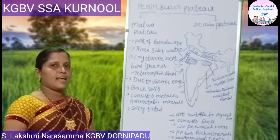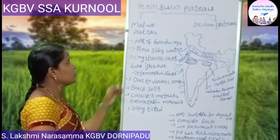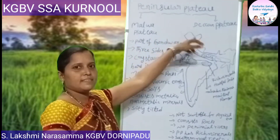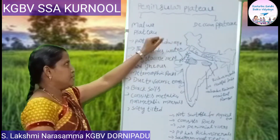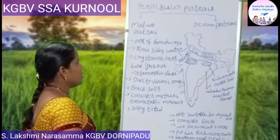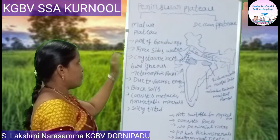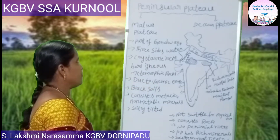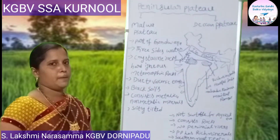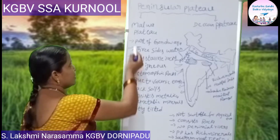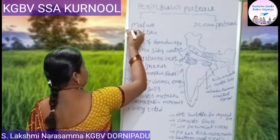Today in this class, we will see the Peninsular Plateau. The Peninsular Plateau is also called the Indian Plateau. It was formed from the Gondwana land. This Peninsular Plateau is divided into two types: one is the Malwa Plateau and another one is the Deccan Plateau.